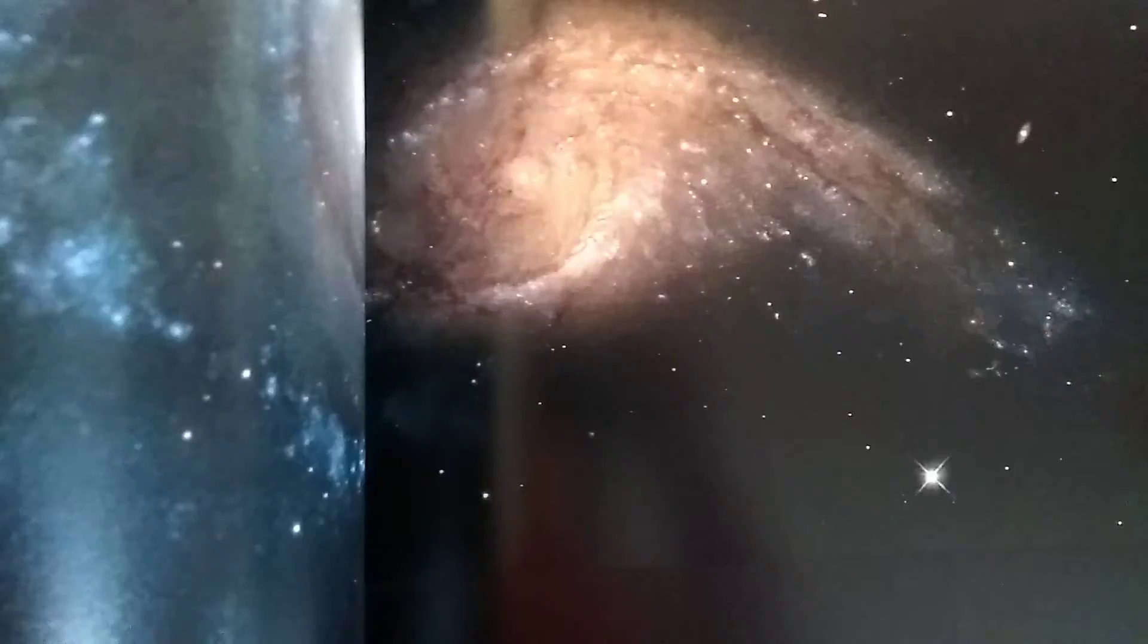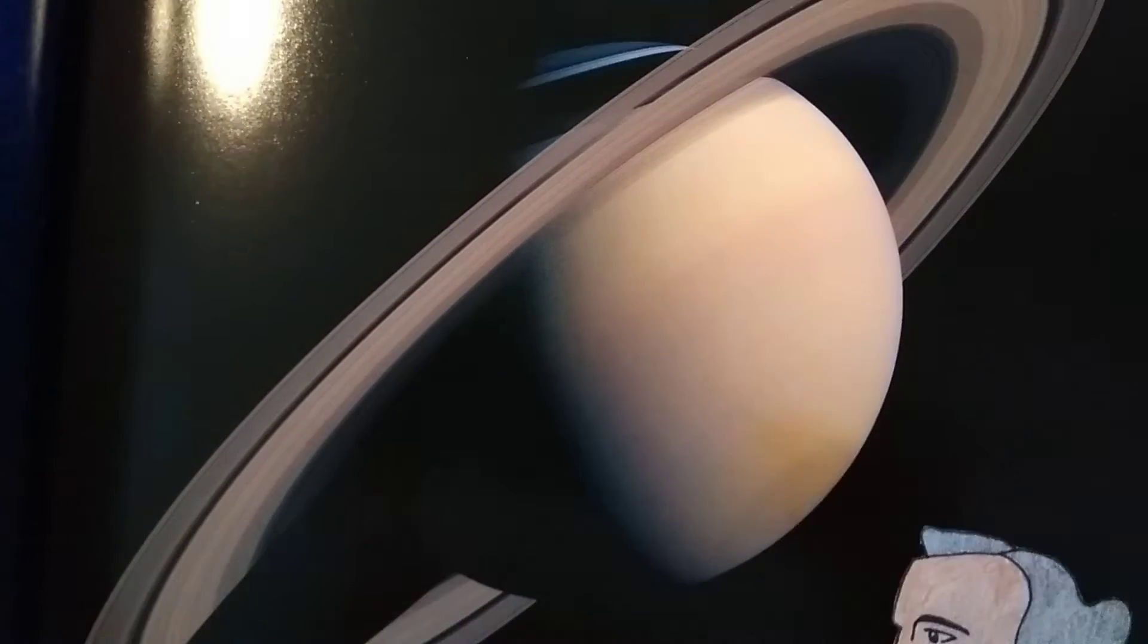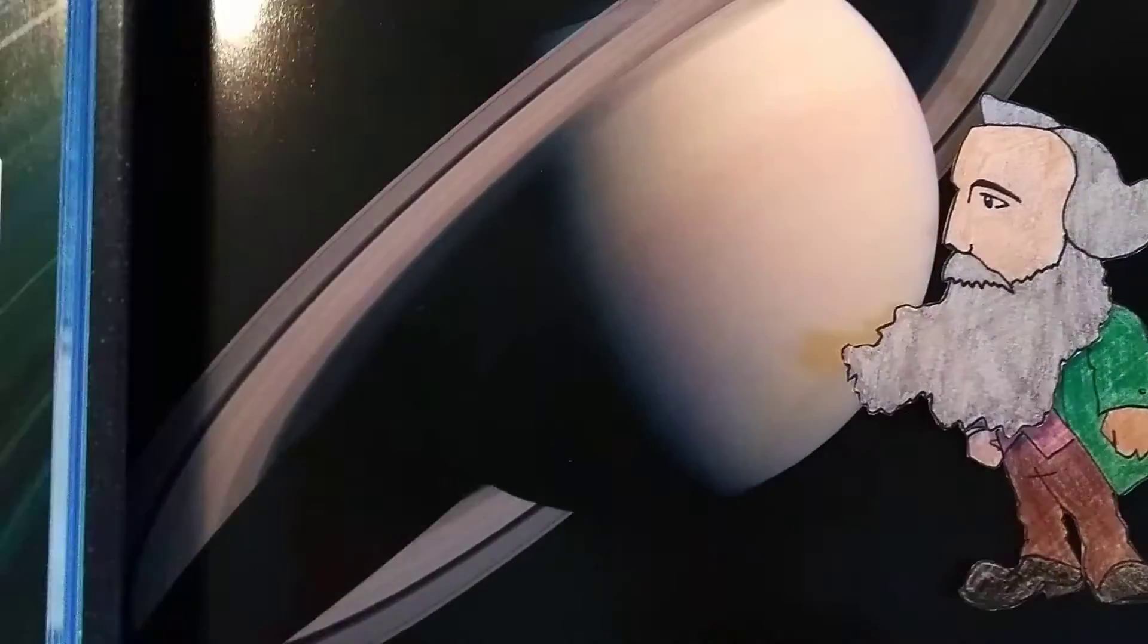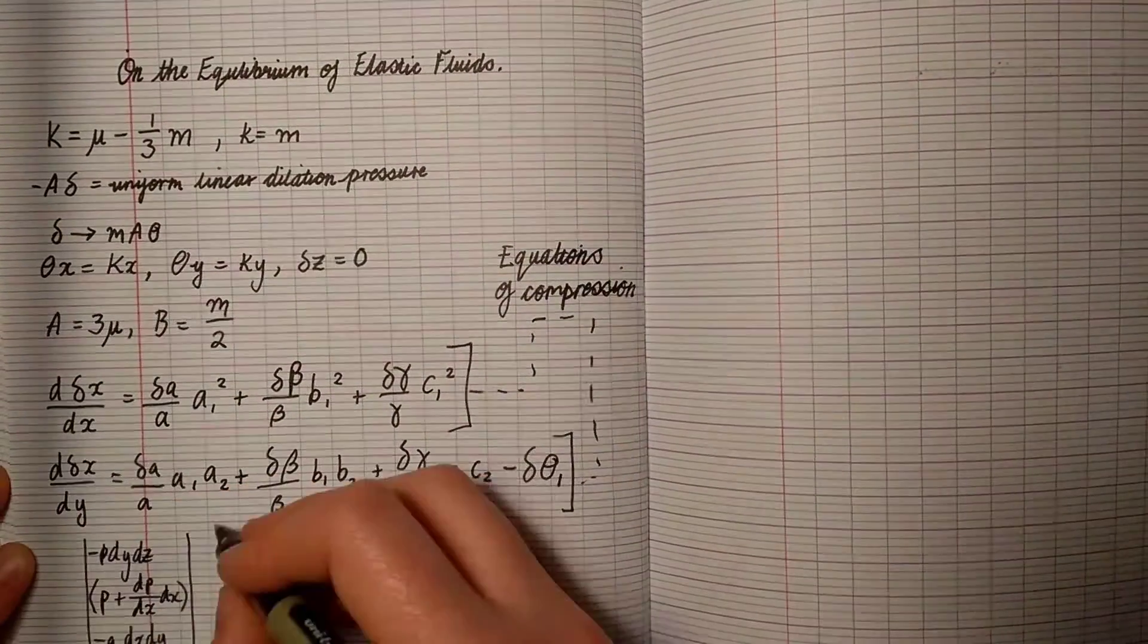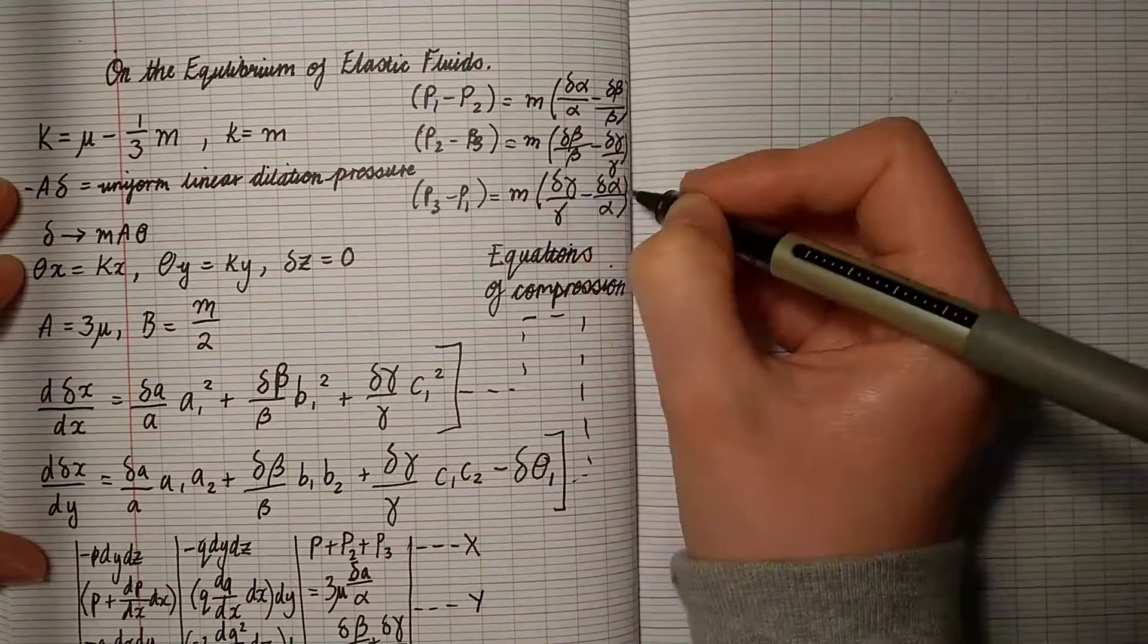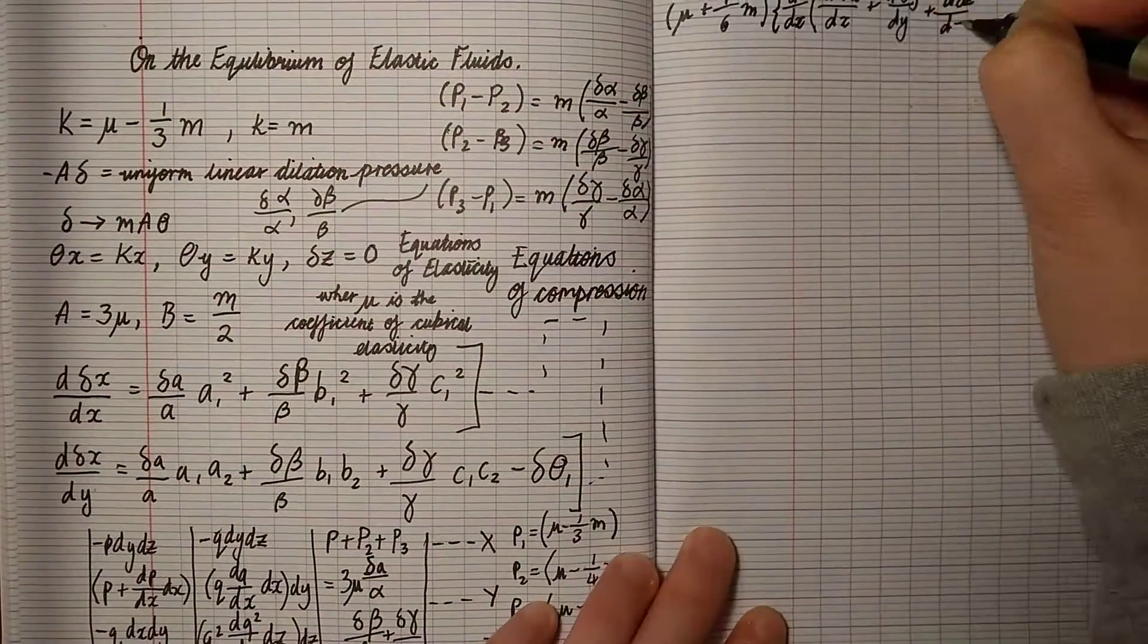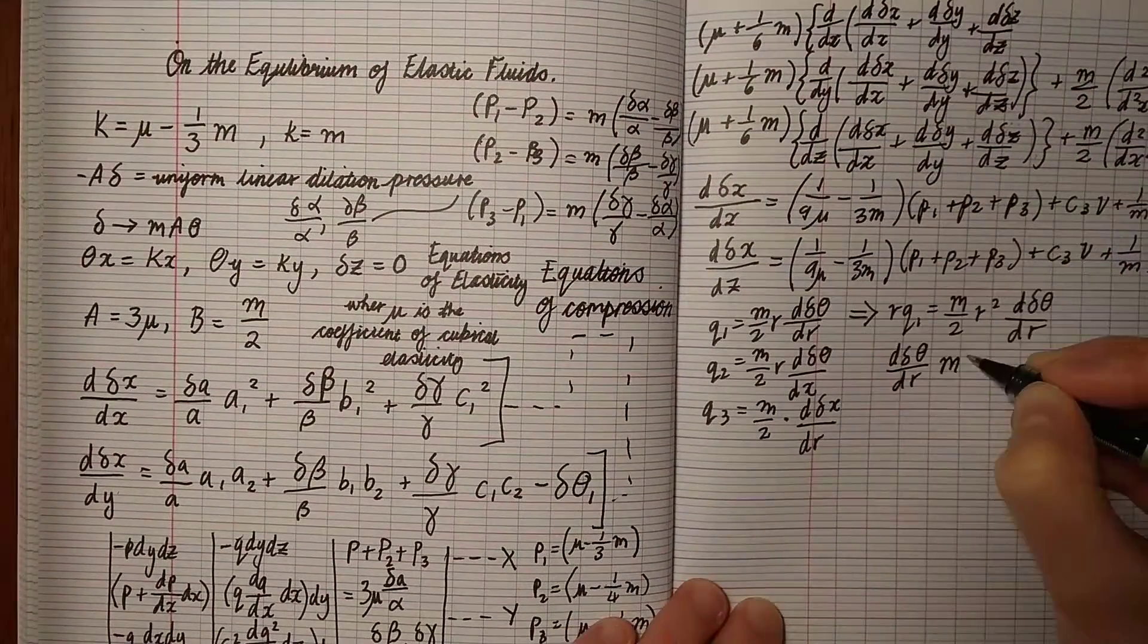His first great breakthrough concerned Saturn's rings. In the days before high-resolution telescopes or space probes, the rings of this planet were a complete mystery. But Maxwell used complicated maths to prove that they were made from tiny particles of ice and rock. And this was more than a century before real photographs confirmed it.